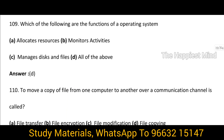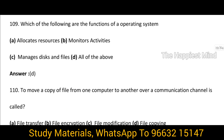Question 109: Which of the following are functions of an operating system? Answer is option D — all of the above. Some of the main functions of an operating system are: it allocates resources, it monitors activities, and it manages disks and files.